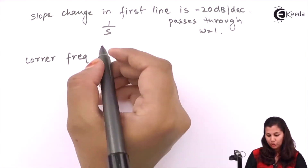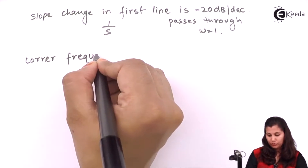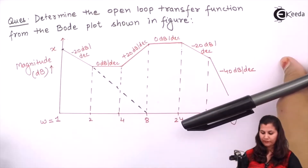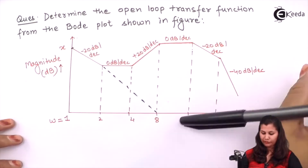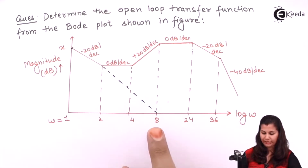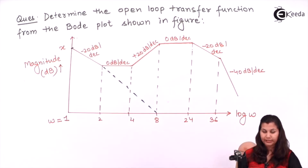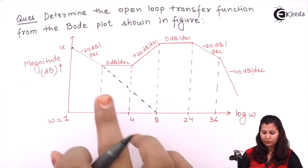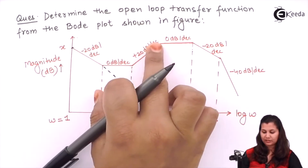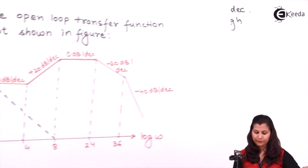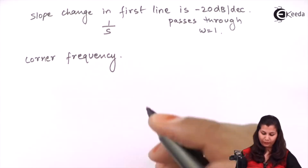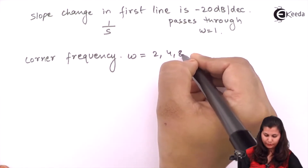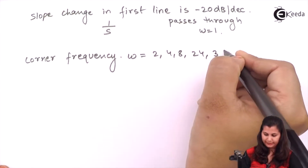Next we identify the corner frequencies — these are the frequencies at which the magnitude plot changes slope. Looking at the Bode plot, the corner frequencies are 2, 4, 8, 24, and 36, because at each of these frequencies the slope is being changed.